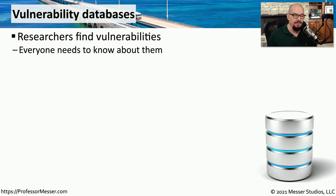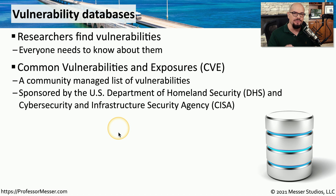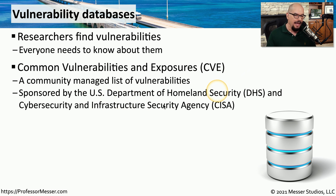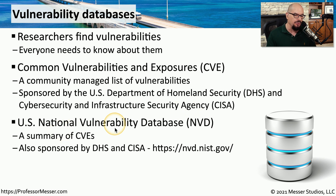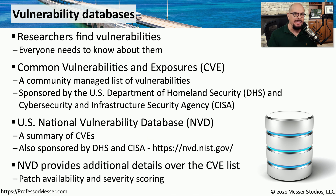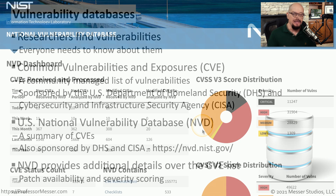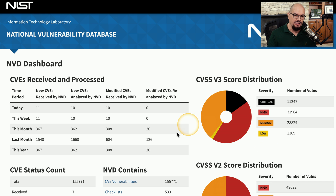One challenge for security professionals is keeping track of where all these vulnerabilities might be and how to protect against them. One way to do this is by using central databases that consolidate all of those vulnerabilities in one place. One common database is the CVE, or Common Vulnerabilities and Exposures Database — a constantly updated database provided by the US Department of Homeland Security and the Cybersecurity and Infrastructure Security Agency. Another good database is the NVD, or US National Vulnerability Database, which is a summary of those CVEs also sponsored by DHS and CISA. The CVE list gives a broad overview, and you can drill down into details from the NVD, which even provides a way to score the severity of vulnerabilities so you can identify lower-priority issues versus critical ones.